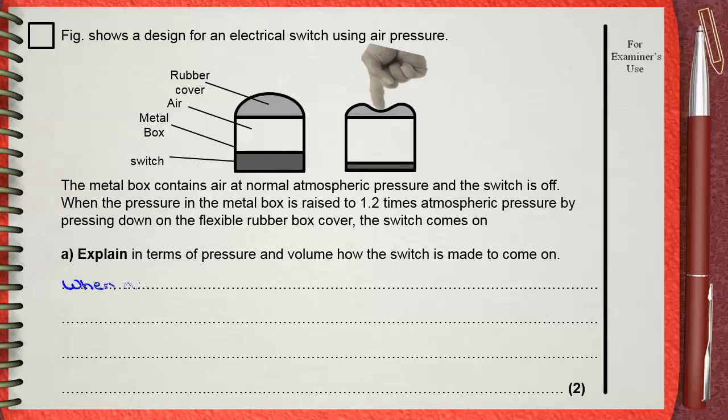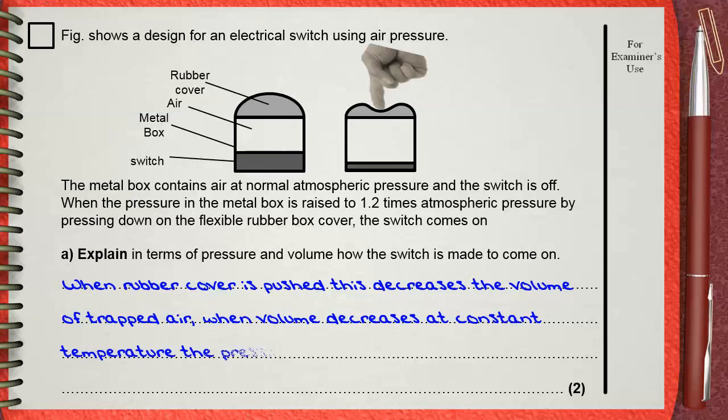When rubber cover is pushed, this decreases the volume of trapped air. When volume decreases at constant temperature, the pressure of the air increases, causing a greater force that pushes the switch. This is given two marks.